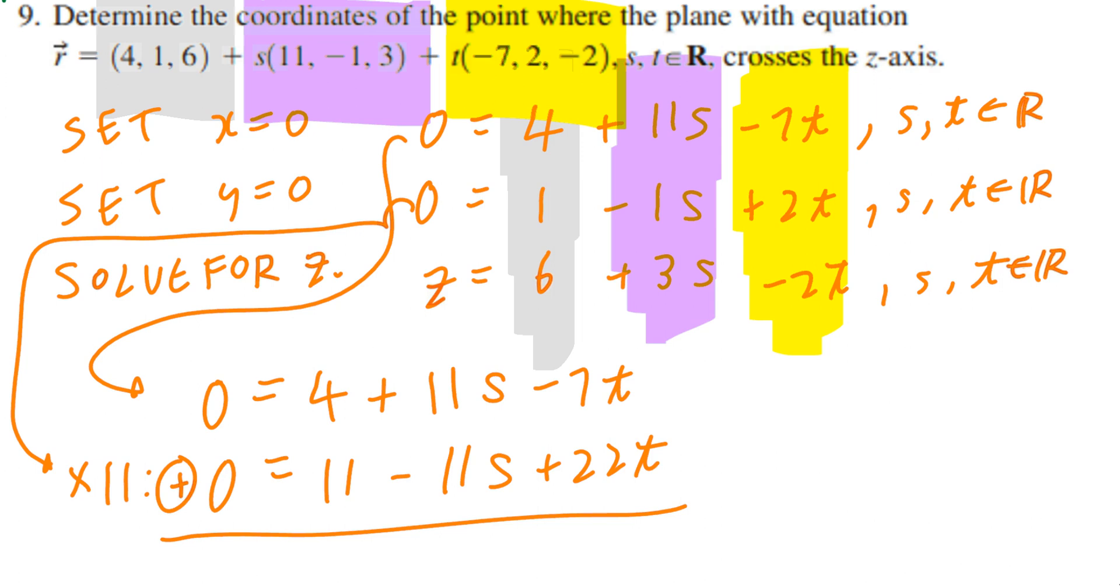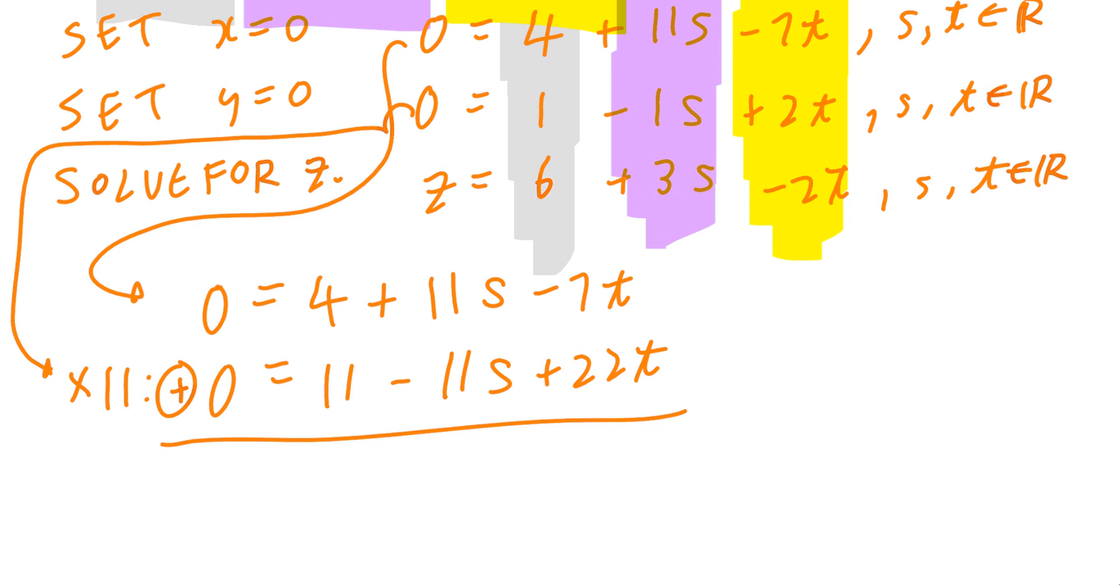Now look what happens, I can add them. Remember, when the signs are opposite, you can add them. If I add this, 0 plus 0 is 0, 4 plus 11 is 15, and negative 7t plus 22t is positive 15t. If you solve for t, t equals negative 1.